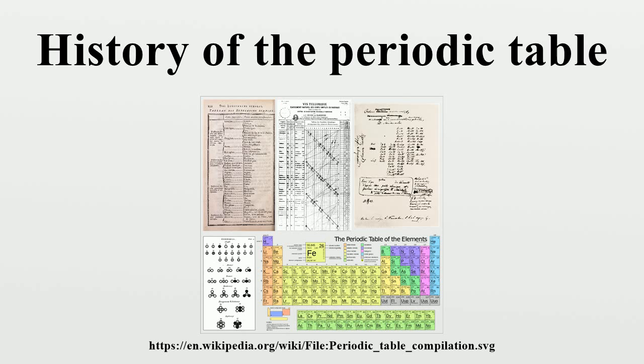Dmitri Mendeleev. The Russian chemist Dmitri Mendeleev was the first scientist to make a periodic table similar to the one used today. Mendeleev arranged the elements by atomic mass, corresponding to relative molar mass. It is sometimes said that he played chemical solitaire on long train journeys, using cards with various facts about the known elements.